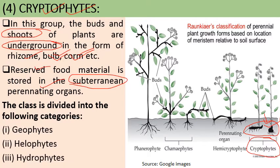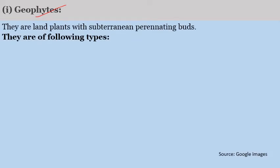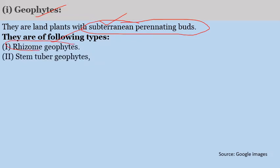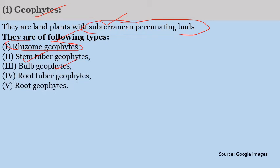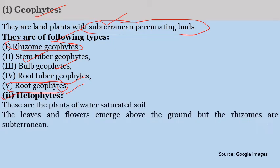Cryptophytes are further divided into Geophytes, Helophytes, and Hydrophytes. Geophytes ('geo' means earth) are land plants with subterranean perennating buds. They include: Rhizome geophytes (underground stem below soil surface), Stem tuber geophytes (e.g., potato), Bulb geophytes (e.g., onion), Root tuber geophytes (e.g., sweet potato), and Root geophytes where roots become fleshy and are present under the soil surface.